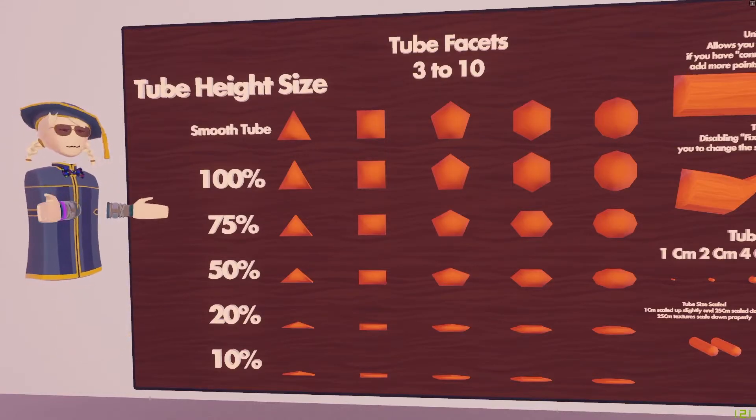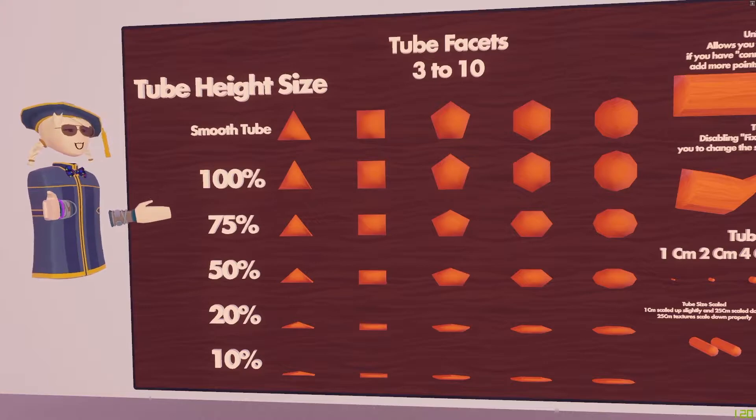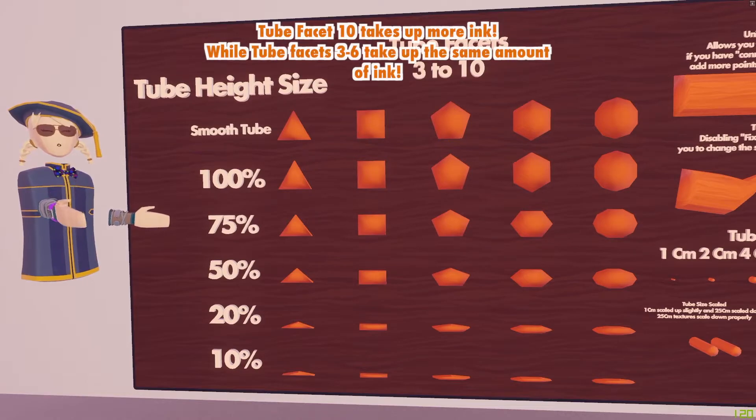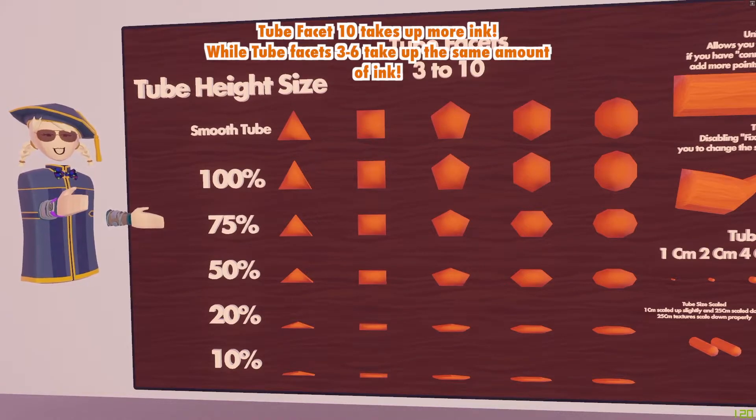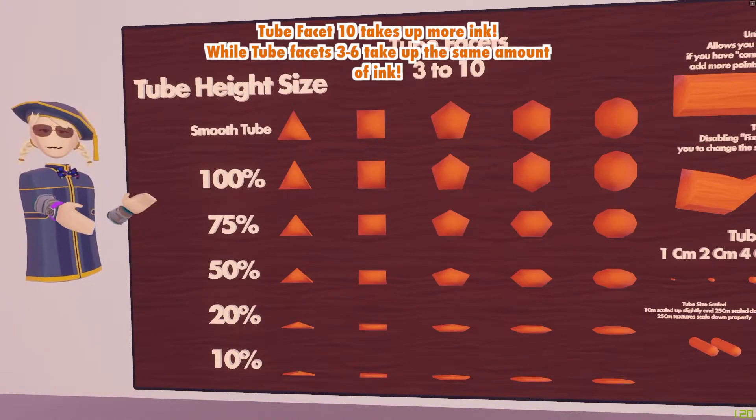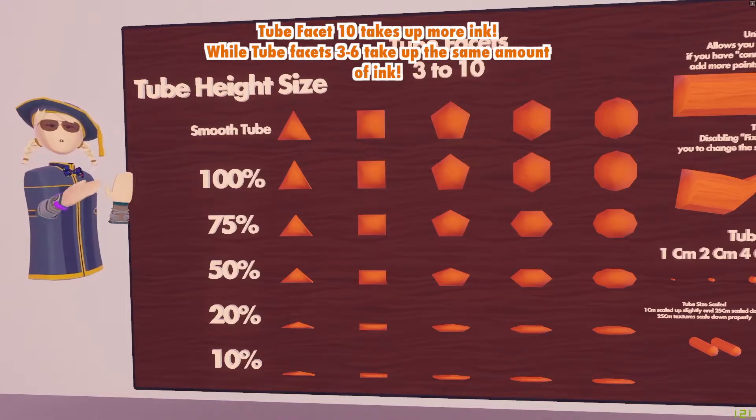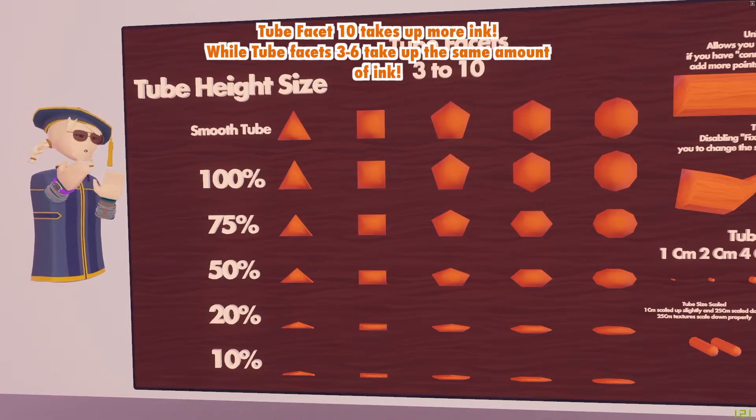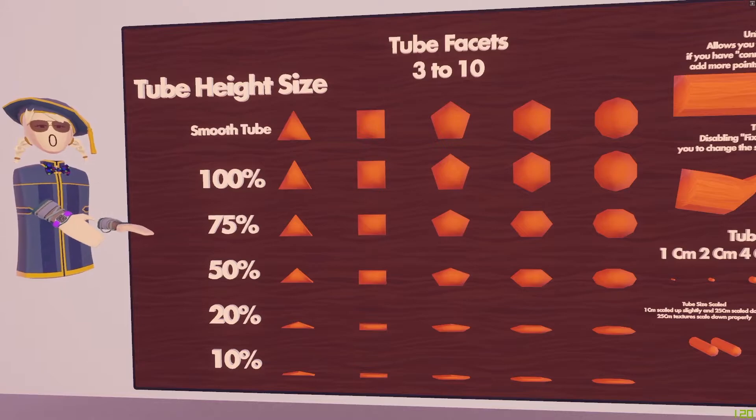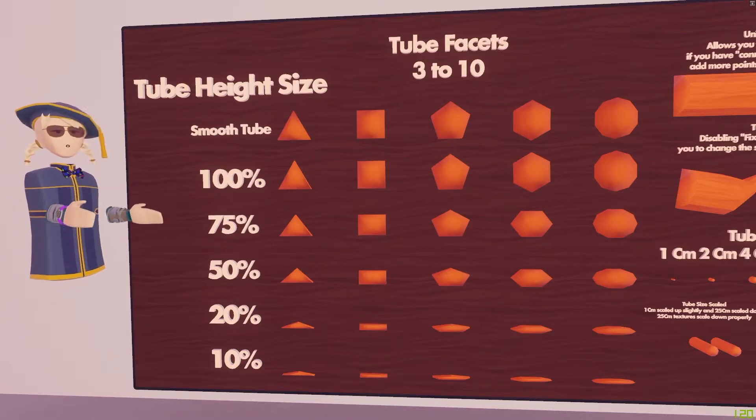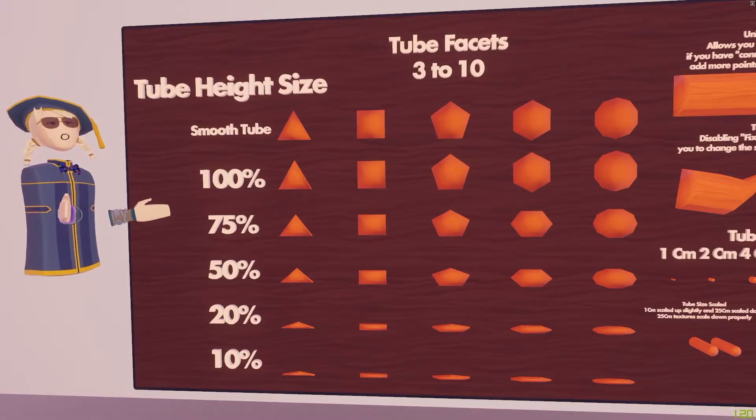Also, tube facet 10 takes up more ink than six and below. Facets six, five, four, and three take up the same amount of ink, while facet 10 takes up a little bit more. If you're trying to squeeze out more detail in your rooms, try using tube facet six instead. We like to use tube facet six for trees. That's how we save a lot of ink.